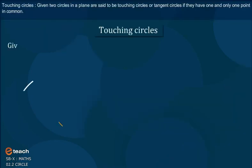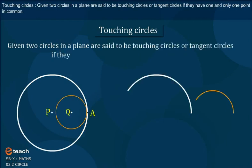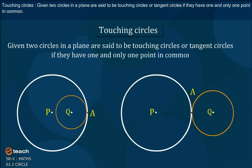Touching circles. Given two circles in a plane are said to be touching circles or tangent circles if they have one and only one point in common.